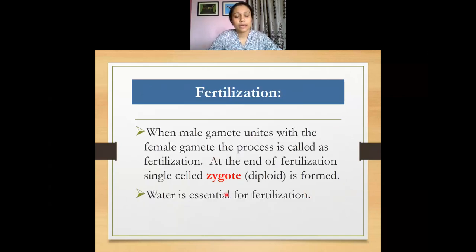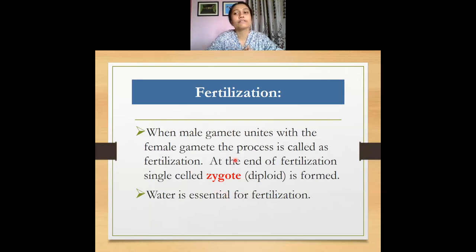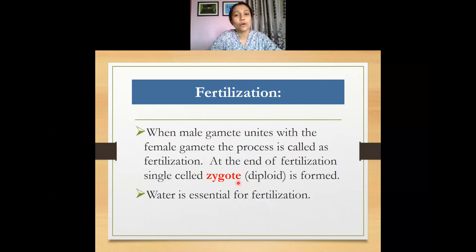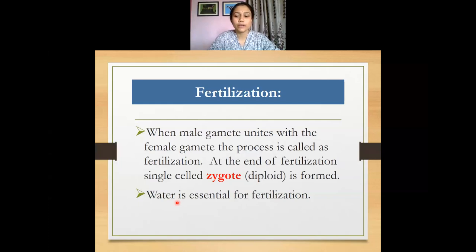When the antheridium and archegonium mature, the male gamete unites with the female gamete in a process called fertilization. In Riccia, fertilization results in a diploid zygote, also known as the oospore. An important point is that water is required to complete this process of fertilization or sexual reproduction.